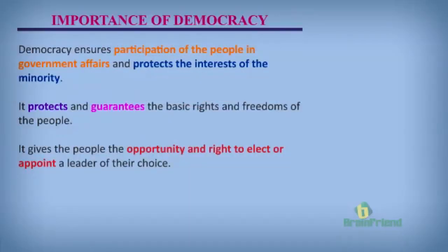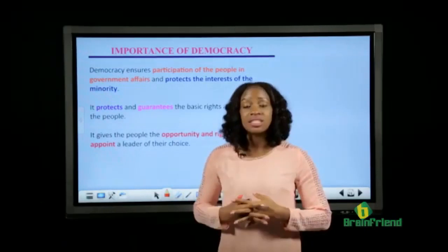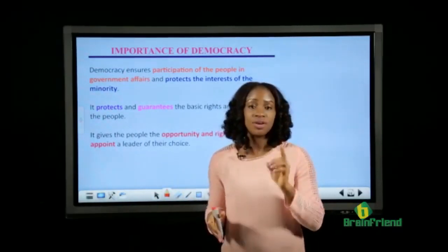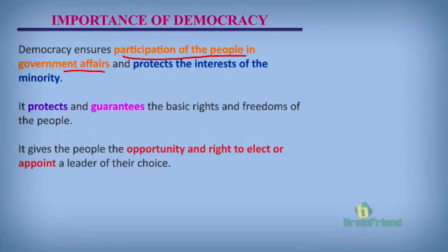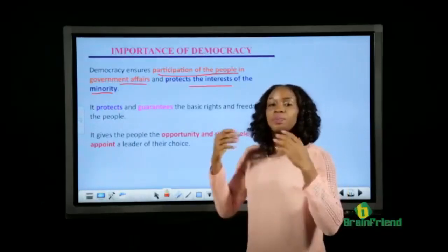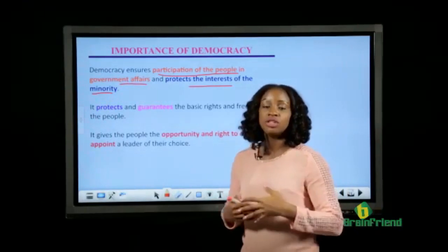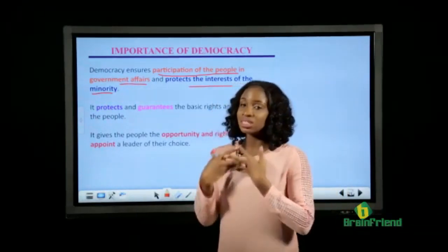Now, why is democracy important? Democracy is the most preferred system of government — preferred to autocracy in which a ruler rules over everyone. Democracy ensures participation of the people in government affairs, meaning everybody is carried along. The people are not neglected. Decisions are not based on the interests or the will of an individual — everybody makes the decision together so that it favors and benefits everyone. It also protects the interests of the minority, so everybody gets a share and joins in making decisions.